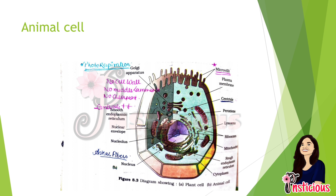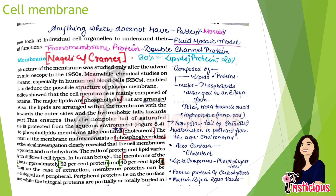In animal cells, there is no cell wall, no middle lamella, and no chloroplast, whereas centrioles are present. We also see microvilli in the upper right portion of the labeling section of the diagram. The animal cell also has centrioles shown in the labeling.